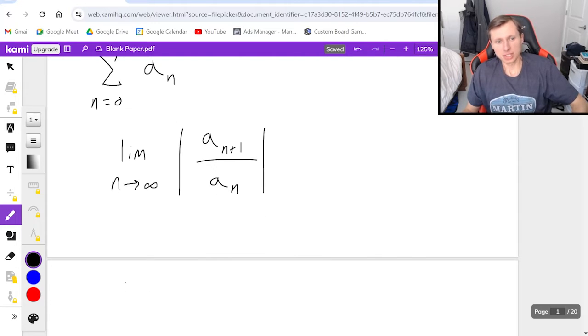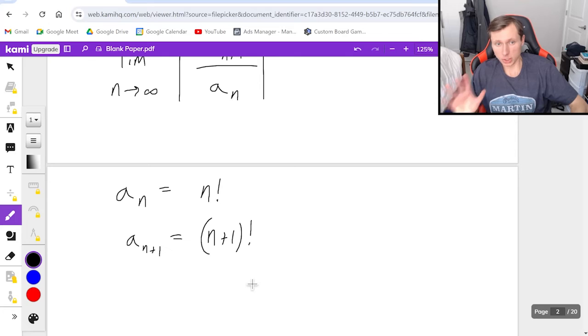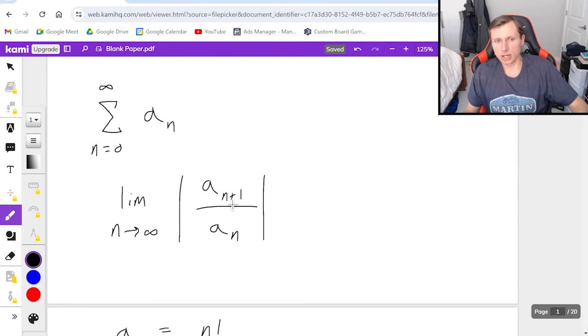If for instance my a sub n, my series is n factorial, then a sub n plus 1 is n plus 1 factorial. And usually what we do with this, we usually rewrite it as n plus 1 times n factorial. And there's a good reason why we do this. Don't worry about it, just take my word for it. This is what you want to do. But anyways back to the ratio test.